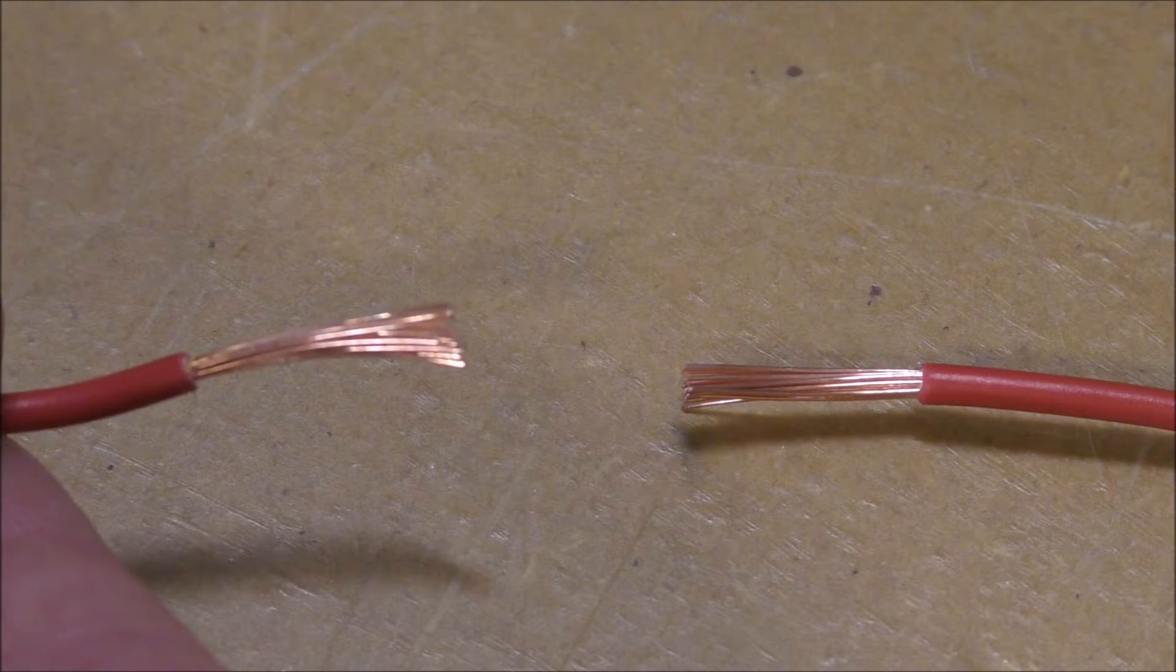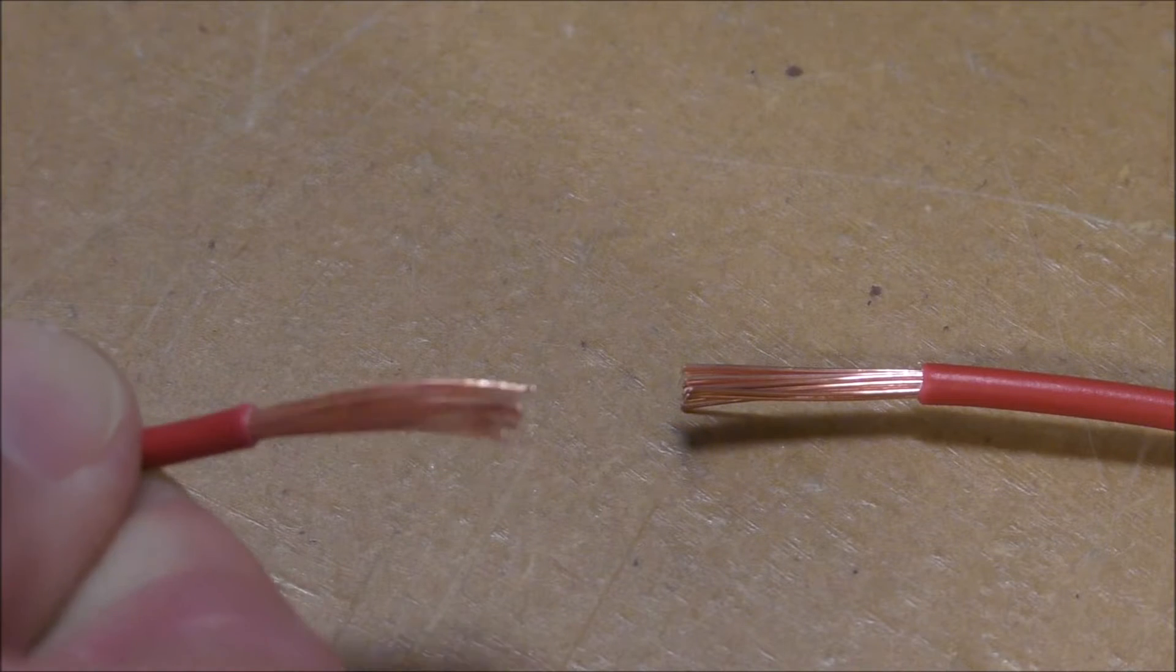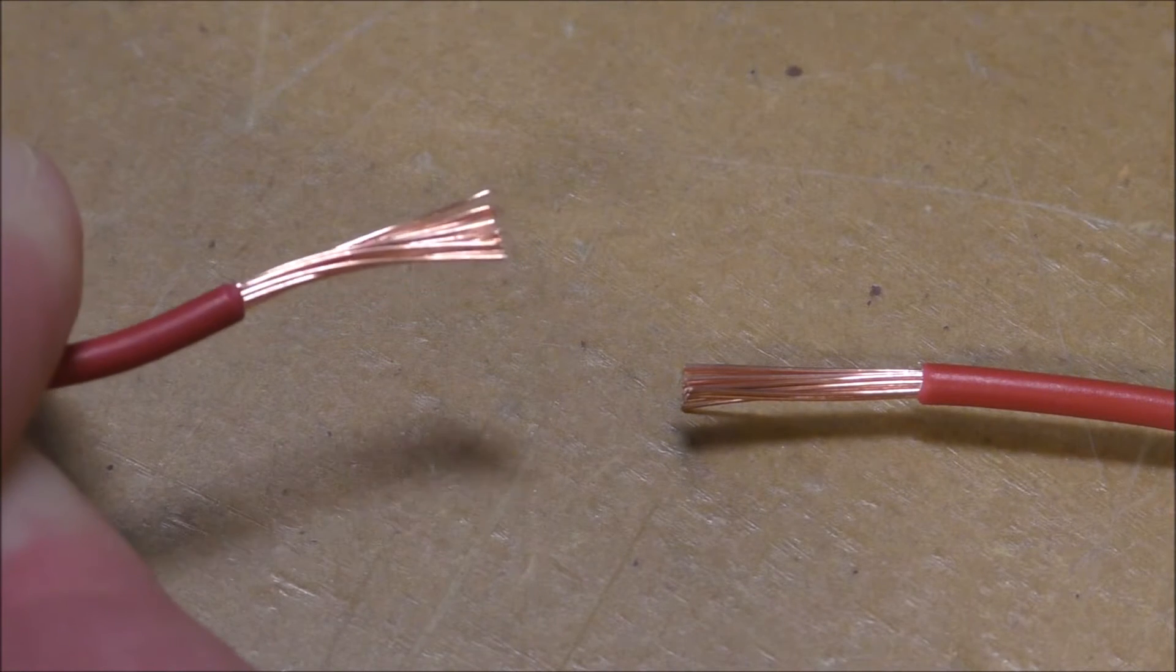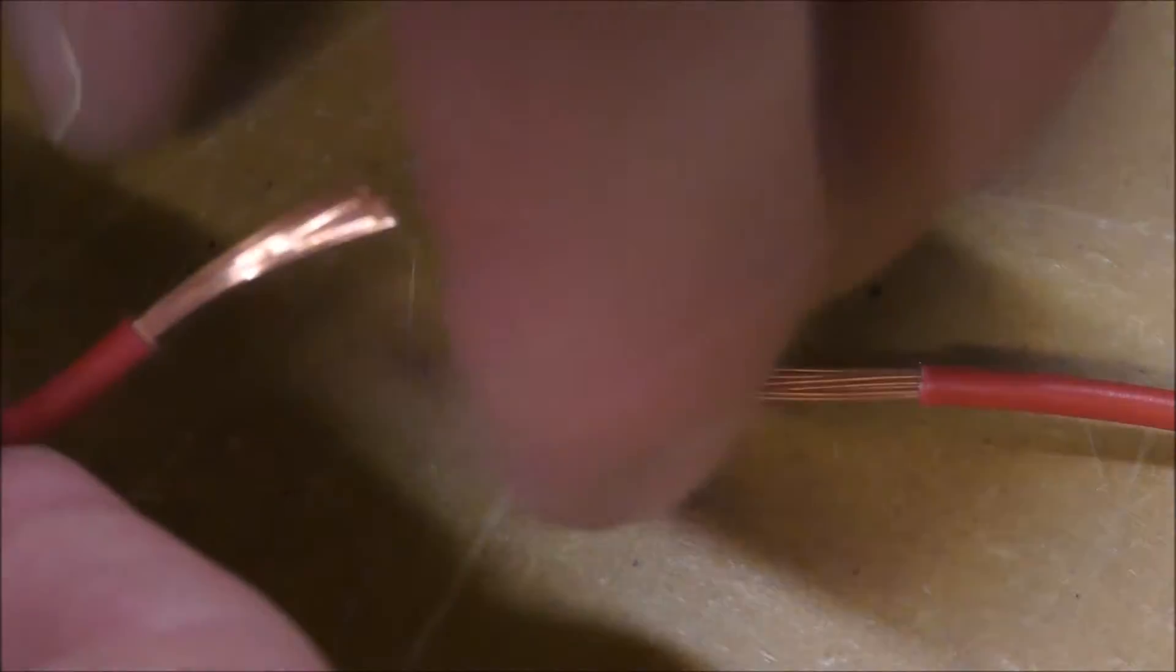First we have stripped back the insulation on our two bits of wire. The first tip to soldering is make sure your connections are clean. The copper on this wire is shiny and new, therefore it's going to make a clean connection.